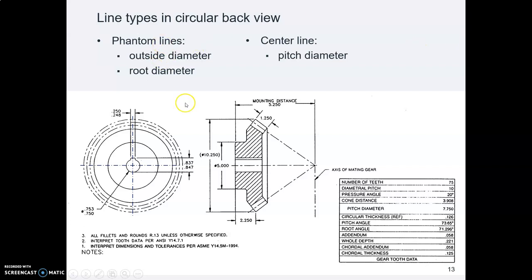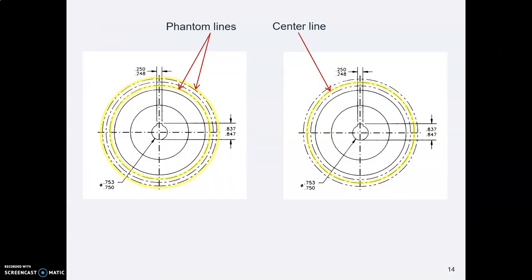And as with a spur gear, we use phantom lines for the outside diameter and the bottom root diameter—here they are highlighted. These are both the same circular view. I've just shown it twice so I can highlight these lines. So the outside diameter and the root diameter are represented by phantom lines. The pitch diameter is represented by a center line, and this is when you're drawing this circular view.